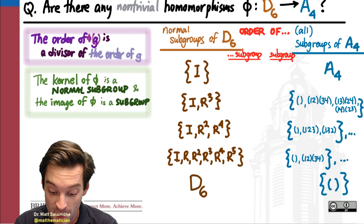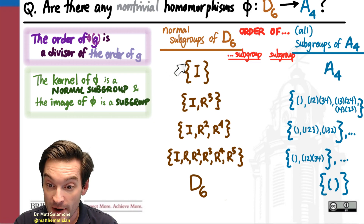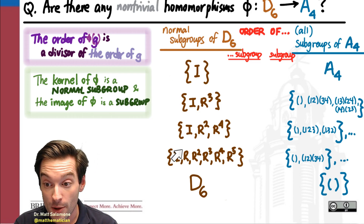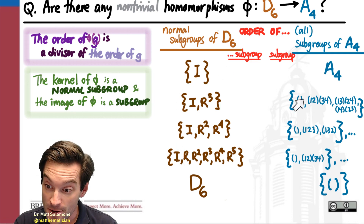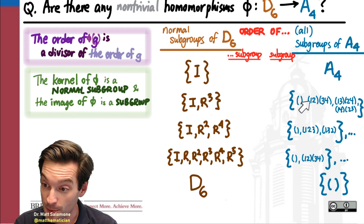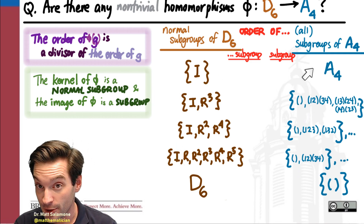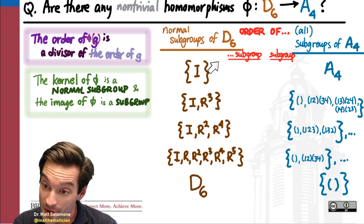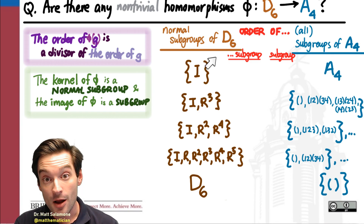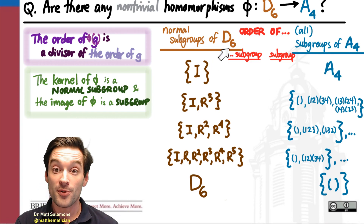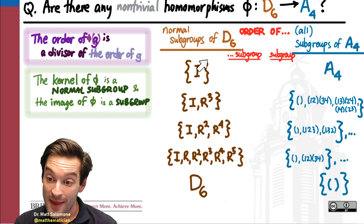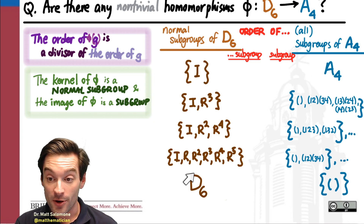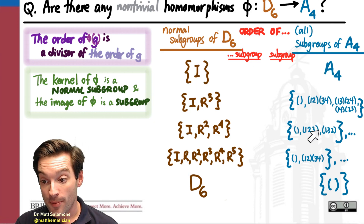An important fact about homomorphisms between groups is that the kernel of any homomorphism is always a normal subgroup of the domain, and the image is always a subgroup — not necessarily normal — of the target group. So if we can list all normal subgroups of the domain and all subgroups of the codomain, those are all the possible kernels and all the possible images.